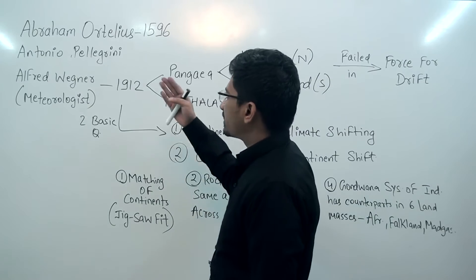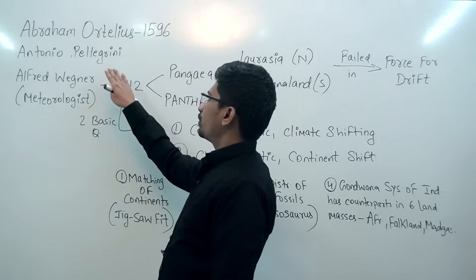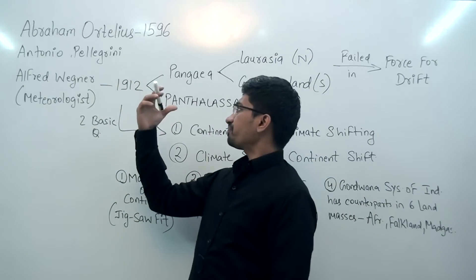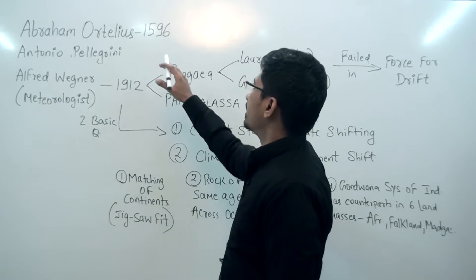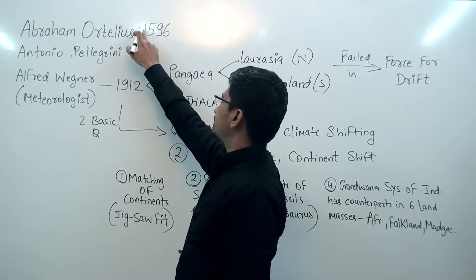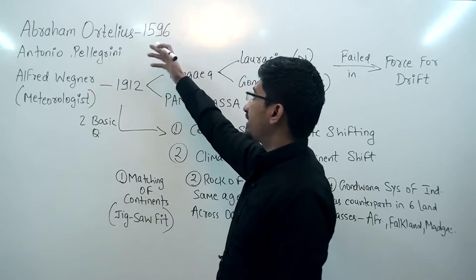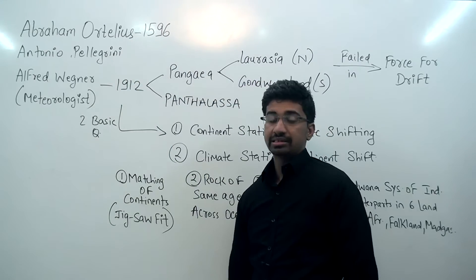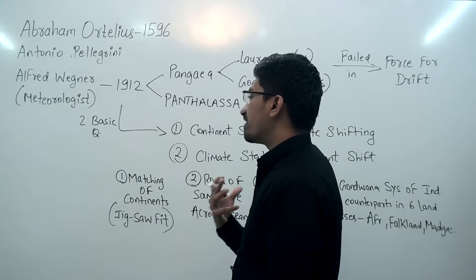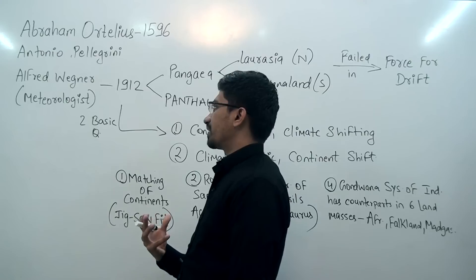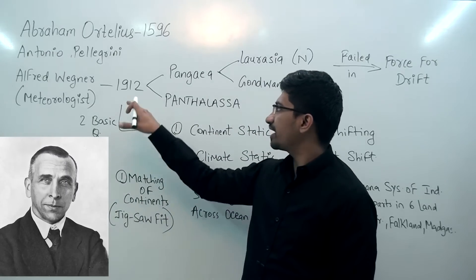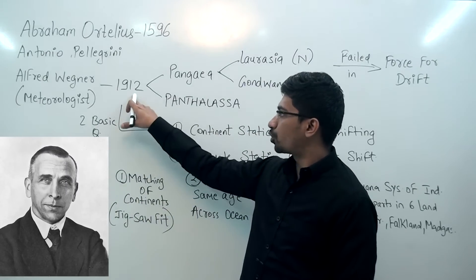Abraham Ortelius and Antonio Pellegrini were scientists who told us that the continents are moving. Like in 1596, Abraham Ortelius first proposed this. But the most comprehensive evidence was given by Alfred Wegener in 1912.